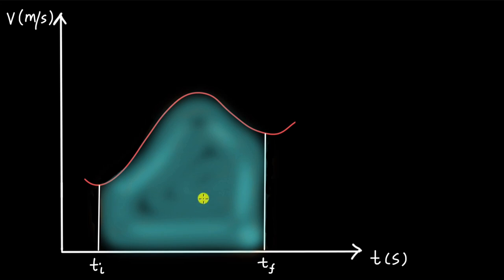We know that the area under a VT graph gives us the displacement of the object in motion. So all of this blue shaded area gives us the displacement of this object that is in motion. We have already calculated areas under a VT graph — in those cases, we calculated the area of a rectangle or a triangle, and that gave us the displacement of the object.